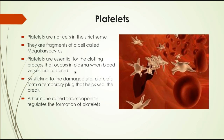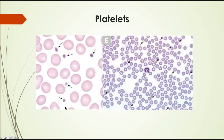Platelets are not cells — they are fragments of a cell called megakaryocytes. They are essential for blood clotting, as your vessels are constantly being ruptured. Platelets stick to the damaged site and form a temporary plug to seal the break. The hormone thrombopoietin regulates the formation of platelets. Under the microscope, platelets appear as tiny fragments, much smaller than a red blood cell.